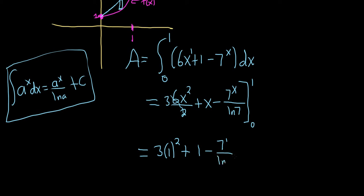And then minus, and now we plug in 0 for all of the x's. So the first one's going to be 0 because it's 3 times 0 squared, so 0 plus 0. Minus 7 to the 0 over the natural log of 7.